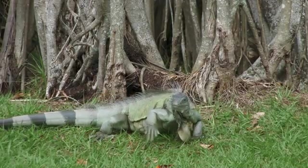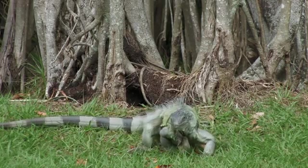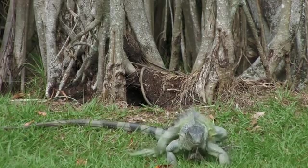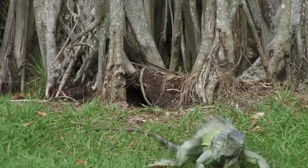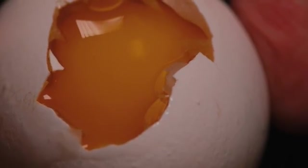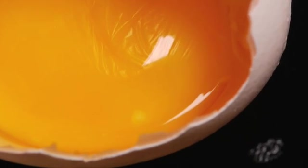When reptiles started laying their eggs with new hard shells on land, the embryos had to be supplied with a larger yolk to feed them through a long period of incubation. In order to accommodate this larger yolk, the embryo itself became a flattened disk squeezed between the yolk and the hard shell.